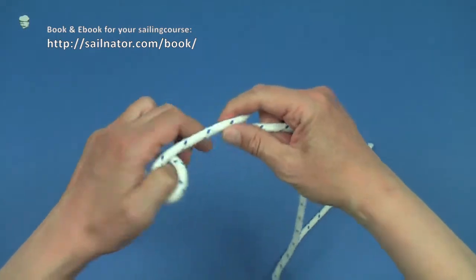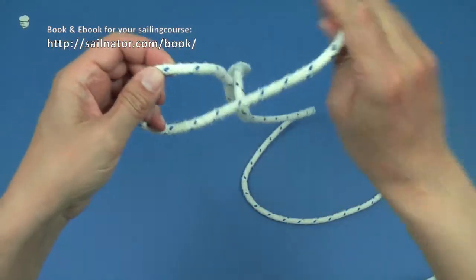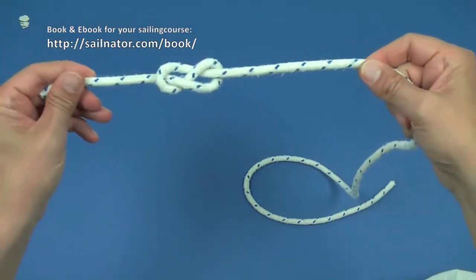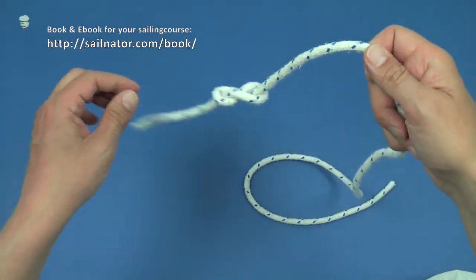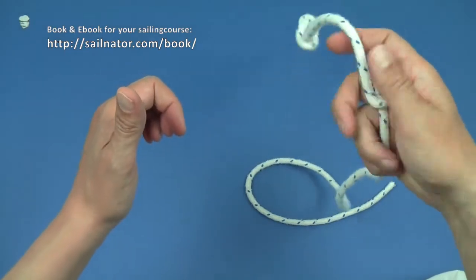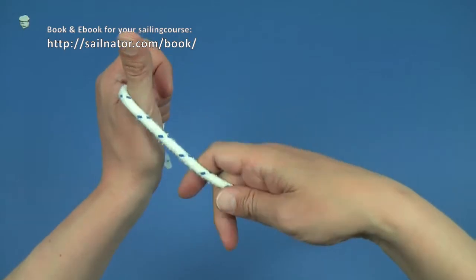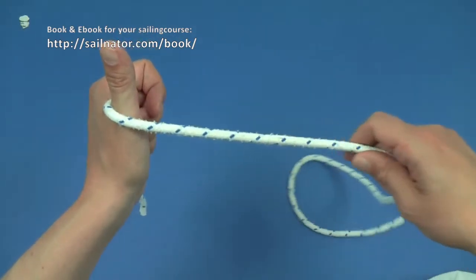Again I tie a figure 8 knot in one end of my line as the moored part. I imagine this is a boat that I want to moor to a post, which is represented by my left thumb in this case. I place the moored part of the line along my left thumb and secure it with my left forefinger.